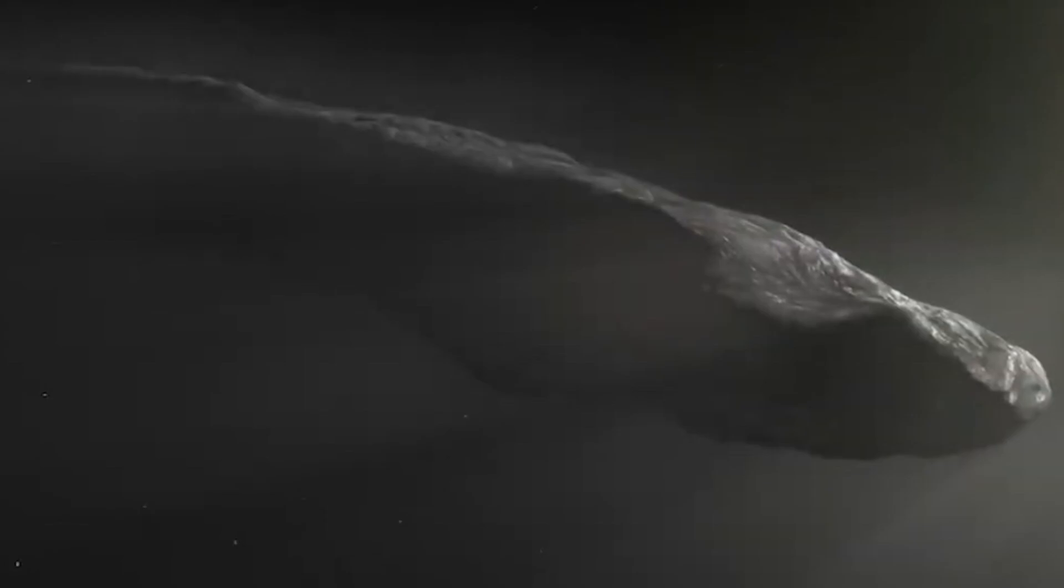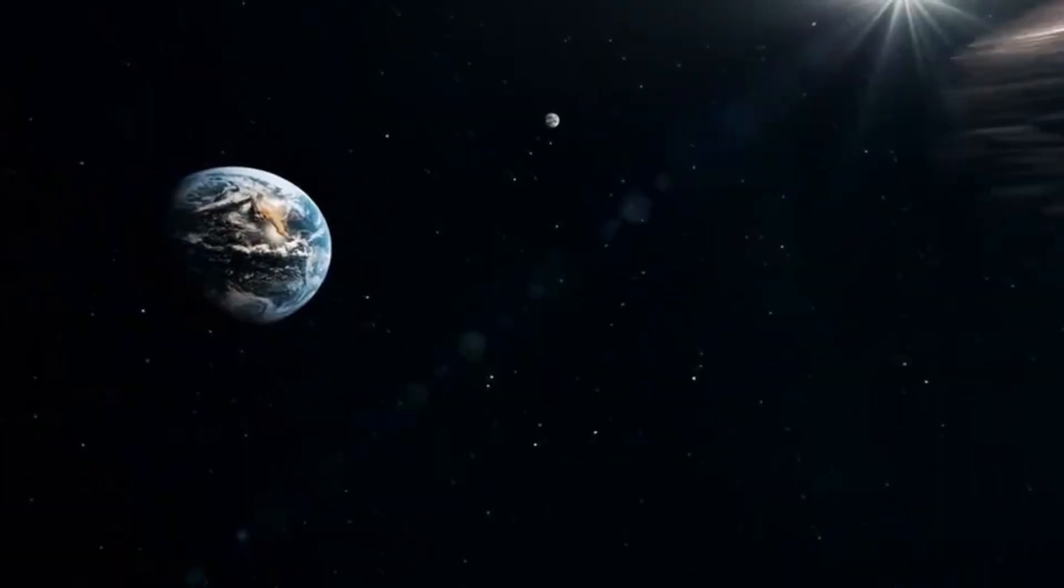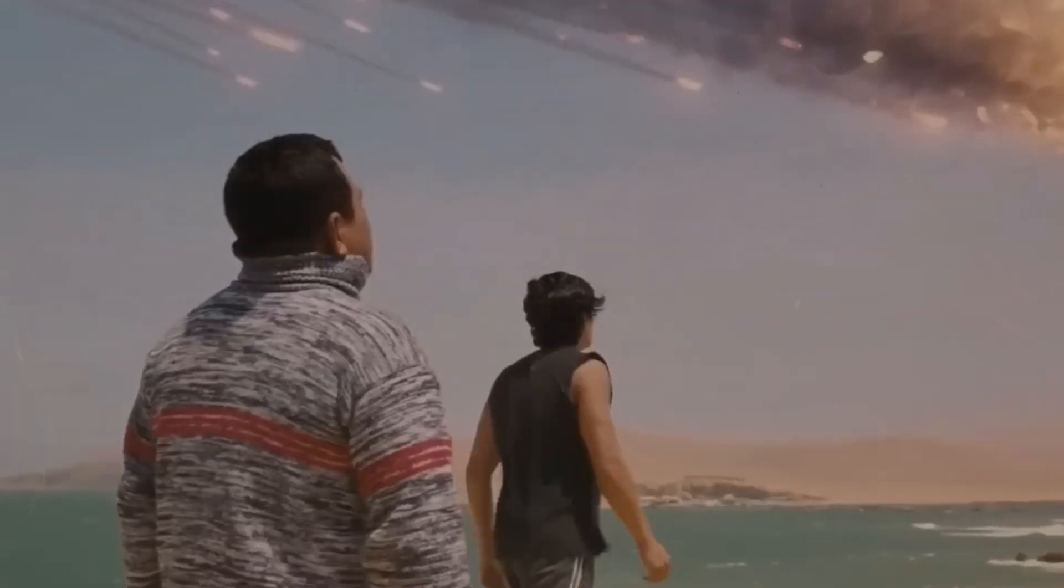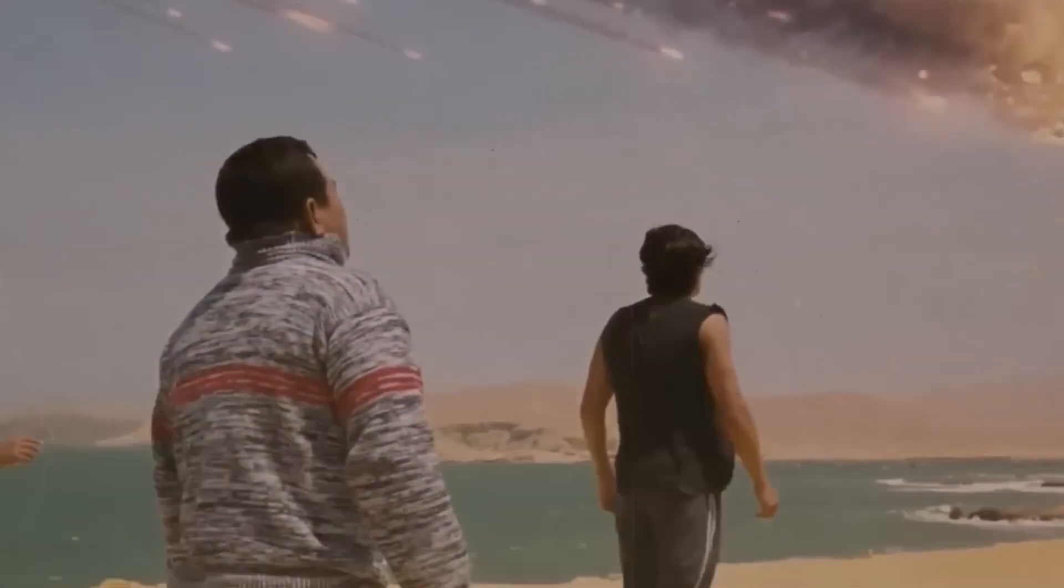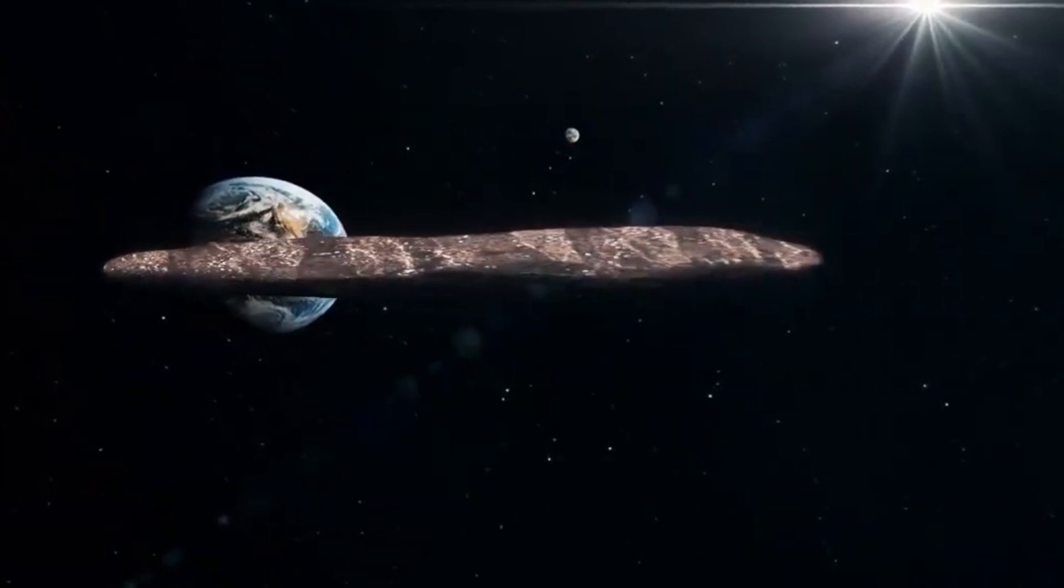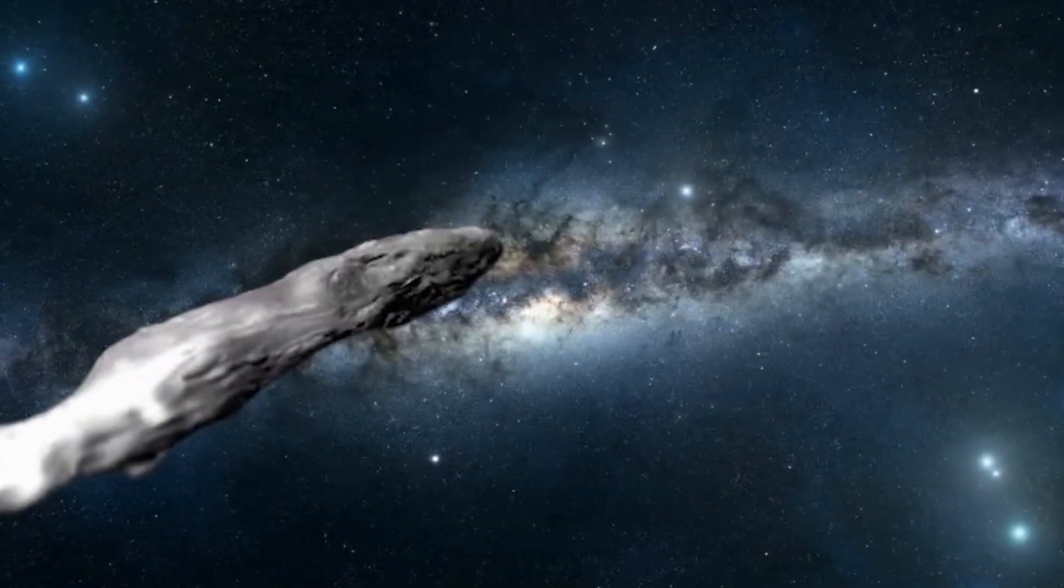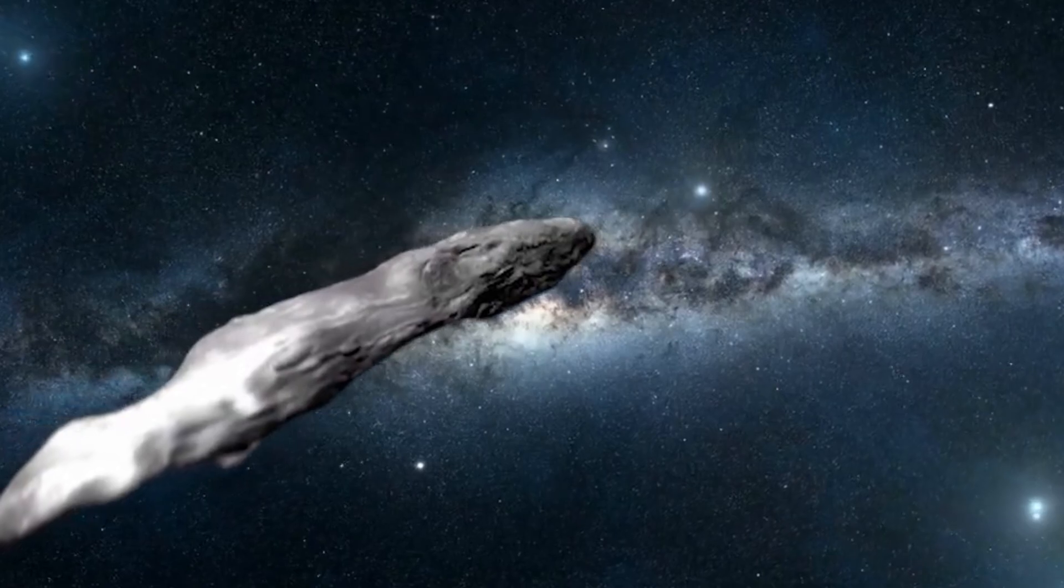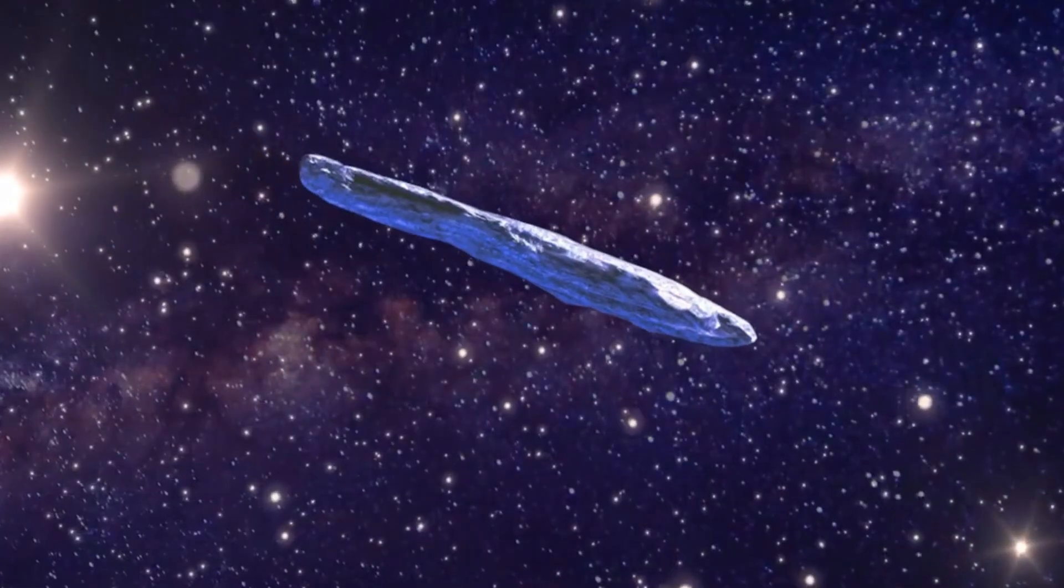Initially classified as an asteroid due to its rocky appearance and behavior, Oumuamua quickly proved to be something entirely different. It defied expectations by suddenly altering its trajectory, a behavior not typical of asteroids. This raised numerous questions about its composition and origin. Was it a comet that had lost its volatile materials after traveling through space for millions of years? Or was it something even more exotic?